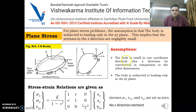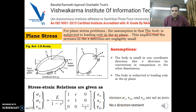In the z direction the body is small in one coordinate direction — the z direction — and the body is subjected to loading only in the xy plane, meaning there is no load in the z direction. In that case, all stress components in the z direction are set to zero: sigma_z, then shear stress components in the xz plane and yz are set to zero.